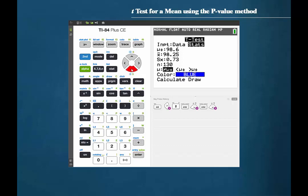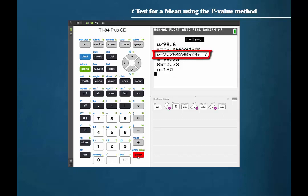Now cursor down to calculate and press ENTER. The p-value is given as 2.28 times 10 to the negative 7.